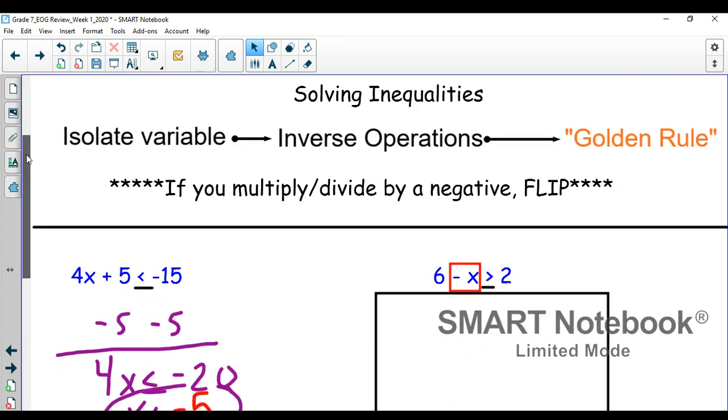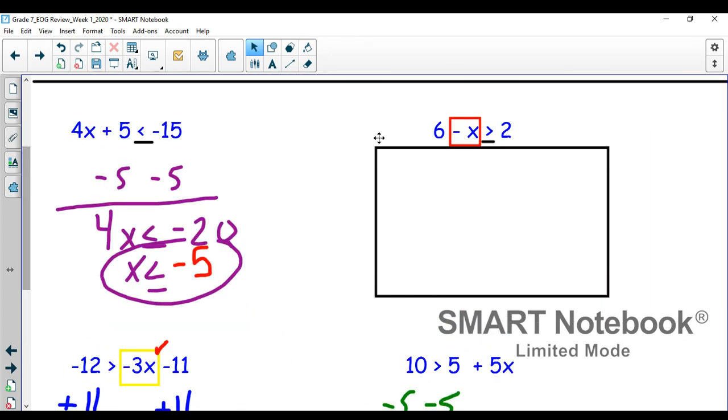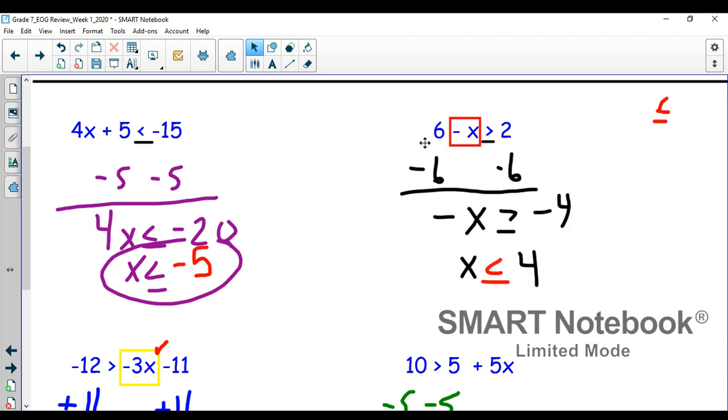The last problem up here, automatically, because I have this boxed in, I know that at the end of the problem, my inequality sign needs to be facing this direction because it's going to flip. So the first step to solving this, I have to get rid of this six. So I subtract six from each side. That leaves me with -x is greater than or equal to -4. I divide each side by -1.